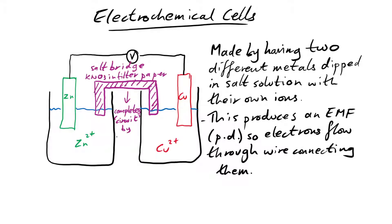We need to complete the circuit somehow, so we have this salt bridge in between. Usually it's a bit of filter paper that's been dunked in potassium nitrate. That completes the circuit by allowing ions to move between the two half cells.